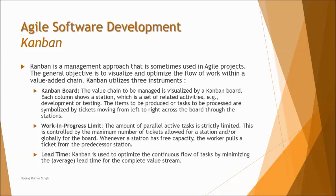Work in progress limit enforces strictness on parallel ongoing activities, setting a cap on how many tasks can be executed simultaneously — for example, limiting to five tasks at a time regardless of team size. Lead time is about optimizing the continuous flow of tasks by minimizing the average time taken across the complete value stream — determining how much time is taken to complete a task from start to end.